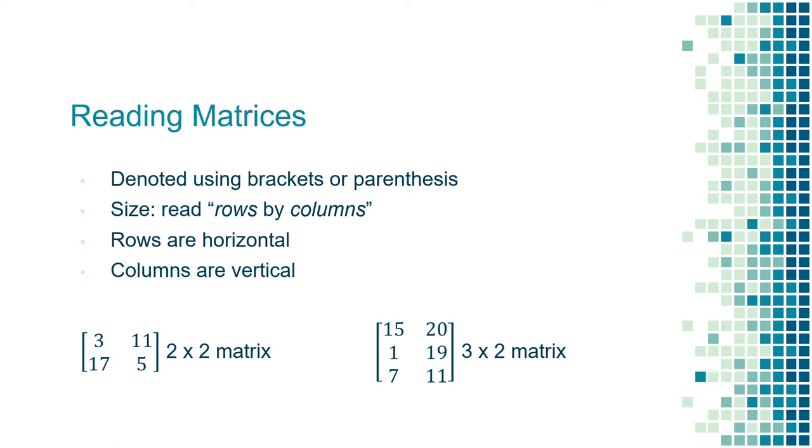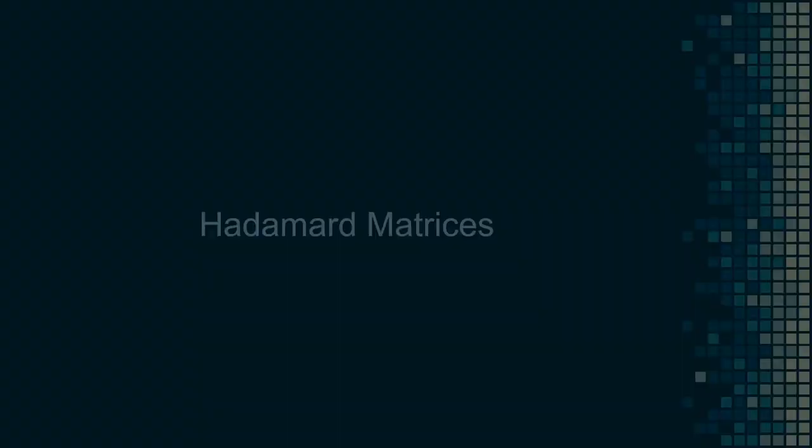This next one here is a three-by-two matrix because it has three rows and two columns. Again, this is pretty simple stuff, but make sure you understand it and remember it since we'll use it a bit later on.